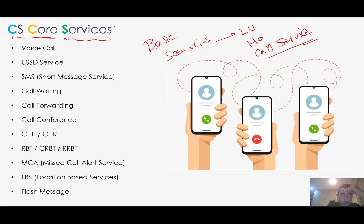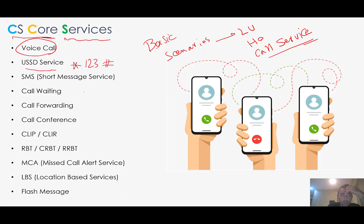The most important service in the CS core is voice call — ordinary voice calls, not WhatsApp or something else. We also have USSD, for example star-123-hash, and SMS, short message service, and Call Waiting.